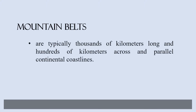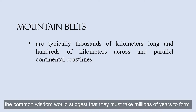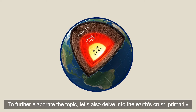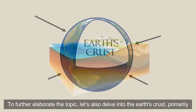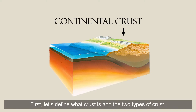Mountain belts are typically thousands of kilometers long and hundreds of kilometers across, unparalleled by continental coastlines. Considering that tectonic plates move so slowly, they must take millions of years to form. To further elaborate the topic, let's also delve into the Earth's crust — specifically, the continental crust that plays an essential role in most mountain range formations.